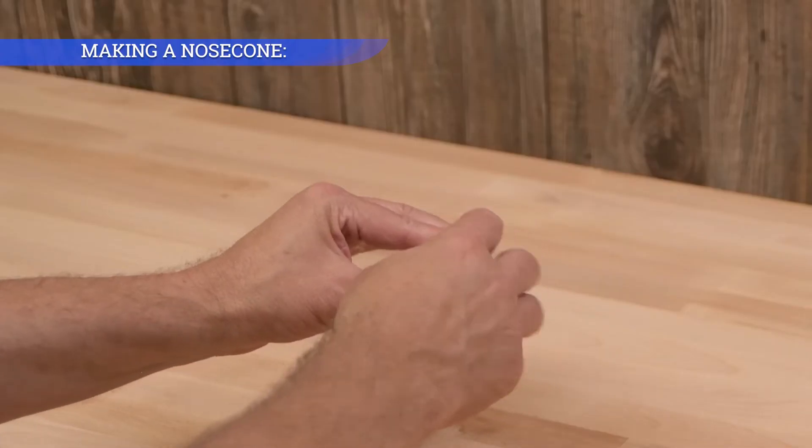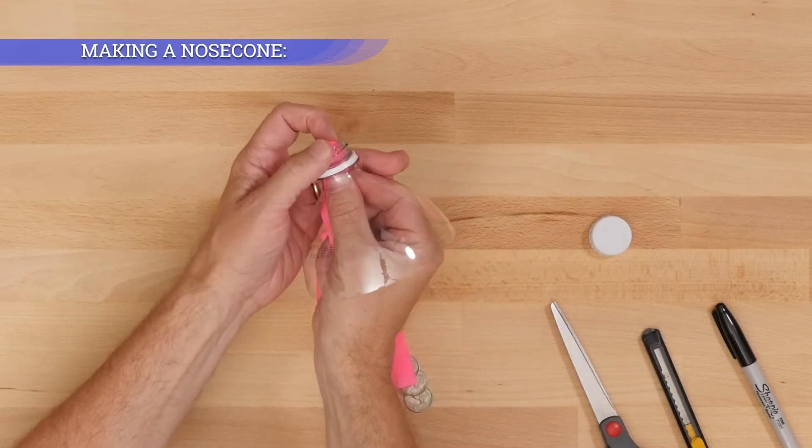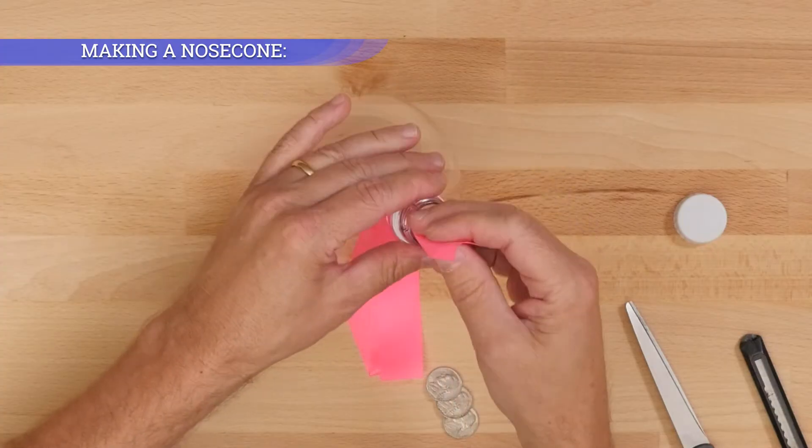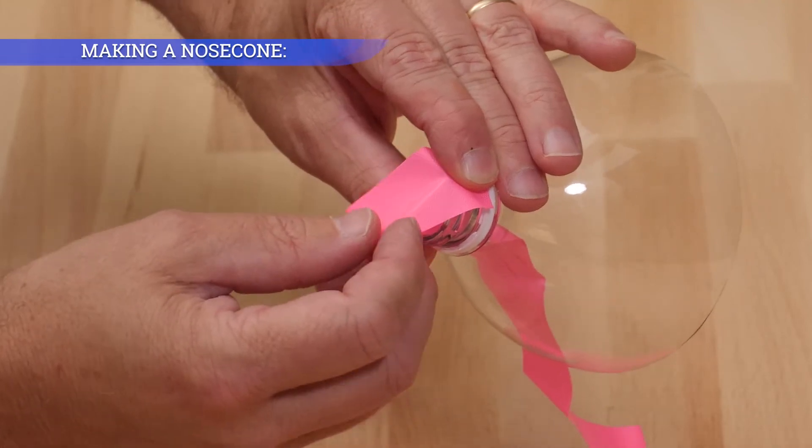Unscrew the cap. Thread flagging tape through the center of the nose cone. Leave a little excess tape on each side.